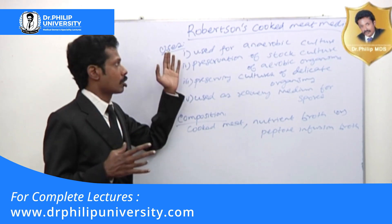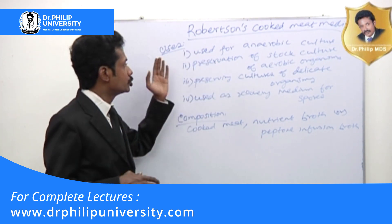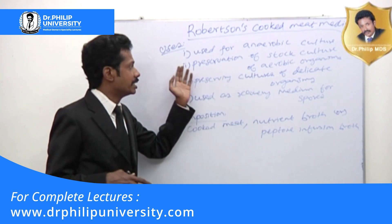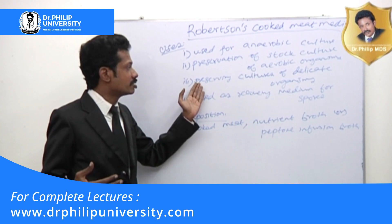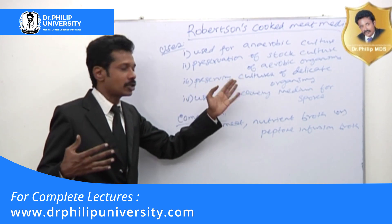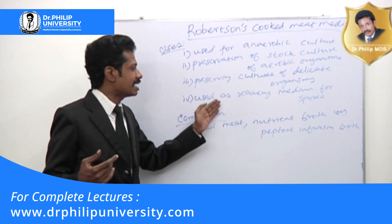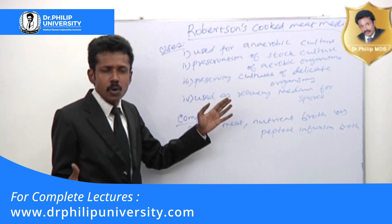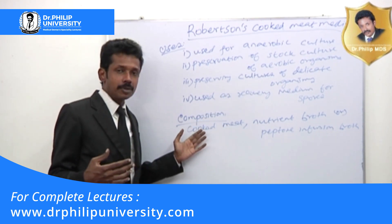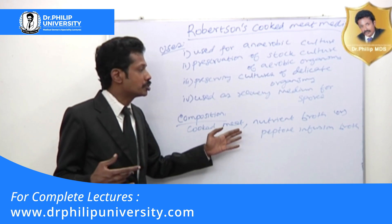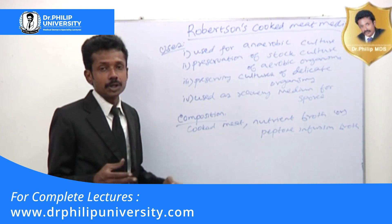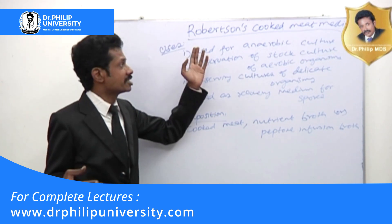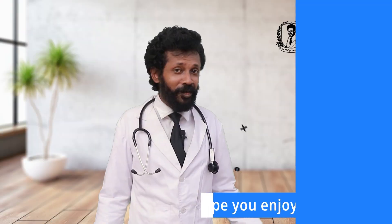To summarize: Robertson's Cooked Meat Media is used for anaerobic culture, for preservation of stock culture of aerobic organisms, for preserving cultures of delicate organisms, and as a recovery medium for spores. Its composition comprises cooked meat with nutrient broth or peptone infusion broth. That is all you need to know about Robertson's Cooked Meat Media.